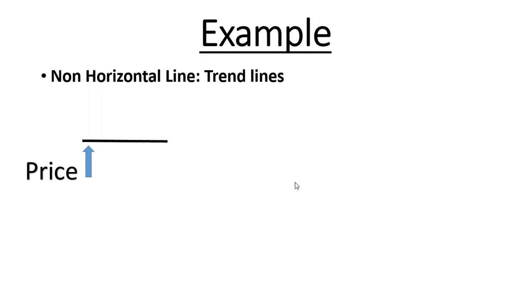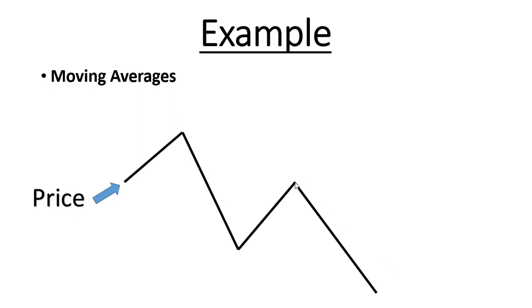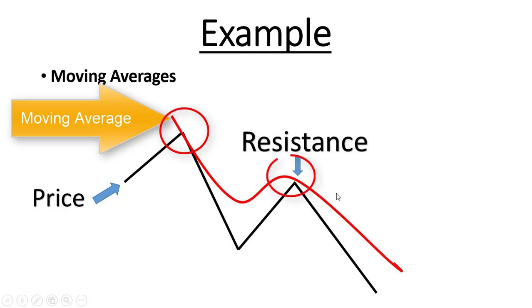Second type: non-horizontal lines, like trend lines or channels. Here is the price making lower lows, and we have two bounces — and those two bounces create what we call a trend line, our resistance in this example. It can be a channel sometimes also. Third type, like previously: moving averages, but in a downtrend. The price bounces two times — one here and one here — and this red line is therefore our resistance.